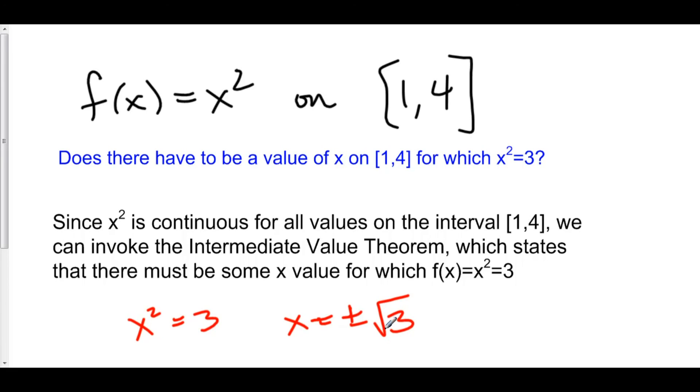Well, the positive square root of three is in between one and four. Therefore, there does have to be an x value from one to four. In this case, it's root three such that x squared equals three. So remember, we're looking for an x value that's in the interval for which x squared is equal to three. And root three is, in fact, in that interval.